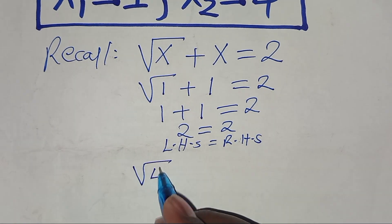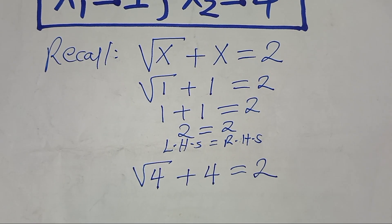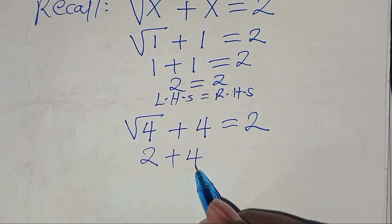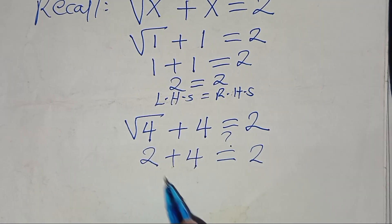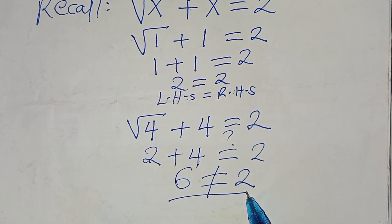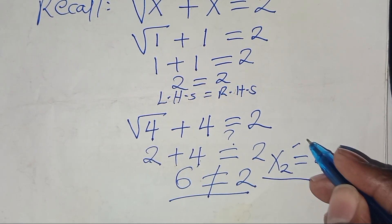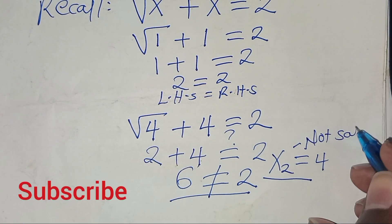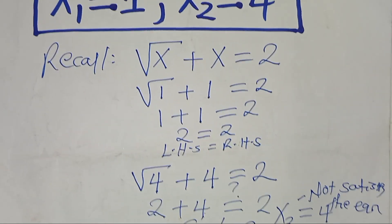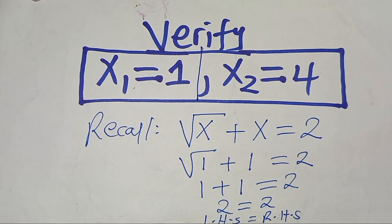Now checking x₂ equals 4: square root of 4 plus 4 equals 2 plus 4 equals 6, which is not equal to 2. So x₂ equals 4 does not satisfy the original equation.